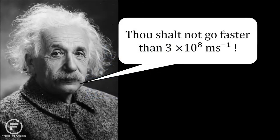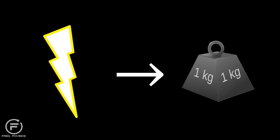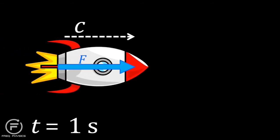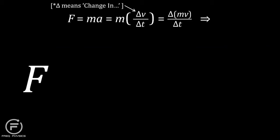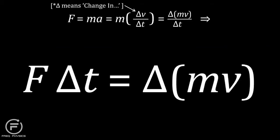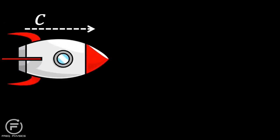However, all we need to know for this derivation is that nothing's velocity can be greater than c. Now, we can see how energy can be converted into mass. Imagine a spaceship travelling infinitely close to the speed of light. For one second, a force is applied to the spaceship. Thanks to Newton's second law, a force applied for a certain time produces a change in momentum. Since the ship cannot go any faster, that change in momentum must be due to an increase in relativistic mass, rather than velocity, which stays at C.